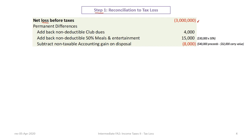We have a section for permanent differences — items that are completely or partially non-taxable or non-deductible. First, we add back non-deductible golf club dues of four thousand dollars. Then meals and entertainment is only fifty percent deductible, so we add back the non-deductible portion: fifteen thousand dollars. Finally, we sold an asset for forty thousand dollars in proceeds with a net book value of thirty-two thousand, giving an eight thousand dollar accounting gain. Since gains and losses are not taxable, we subtract that non-taxable gain.